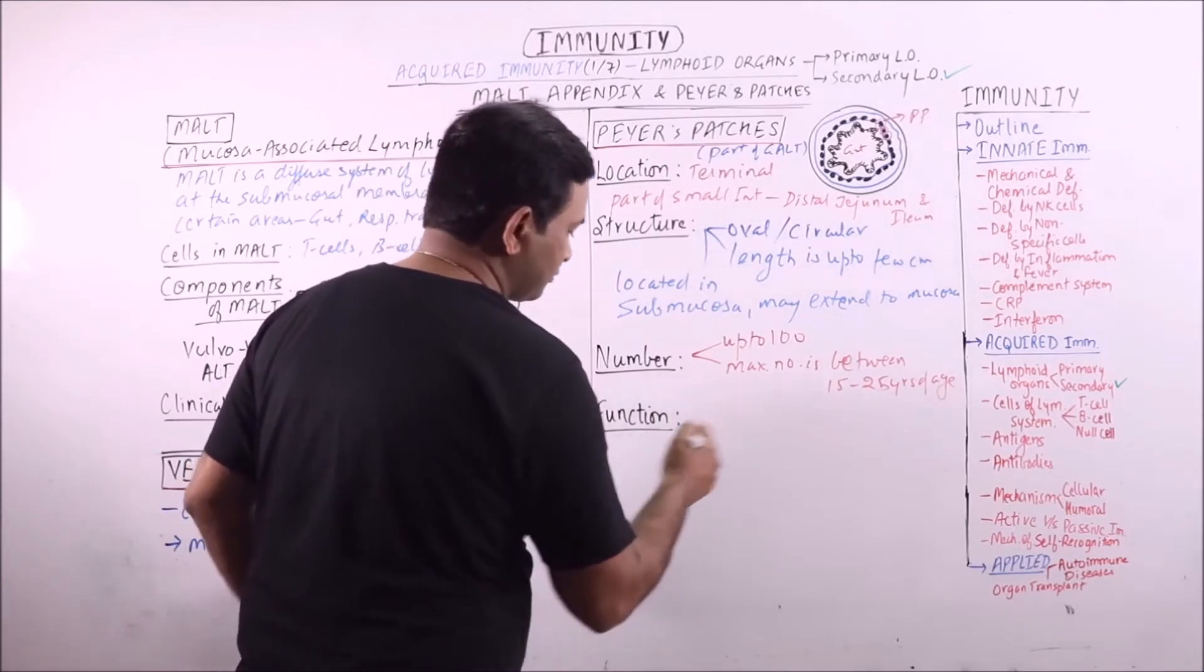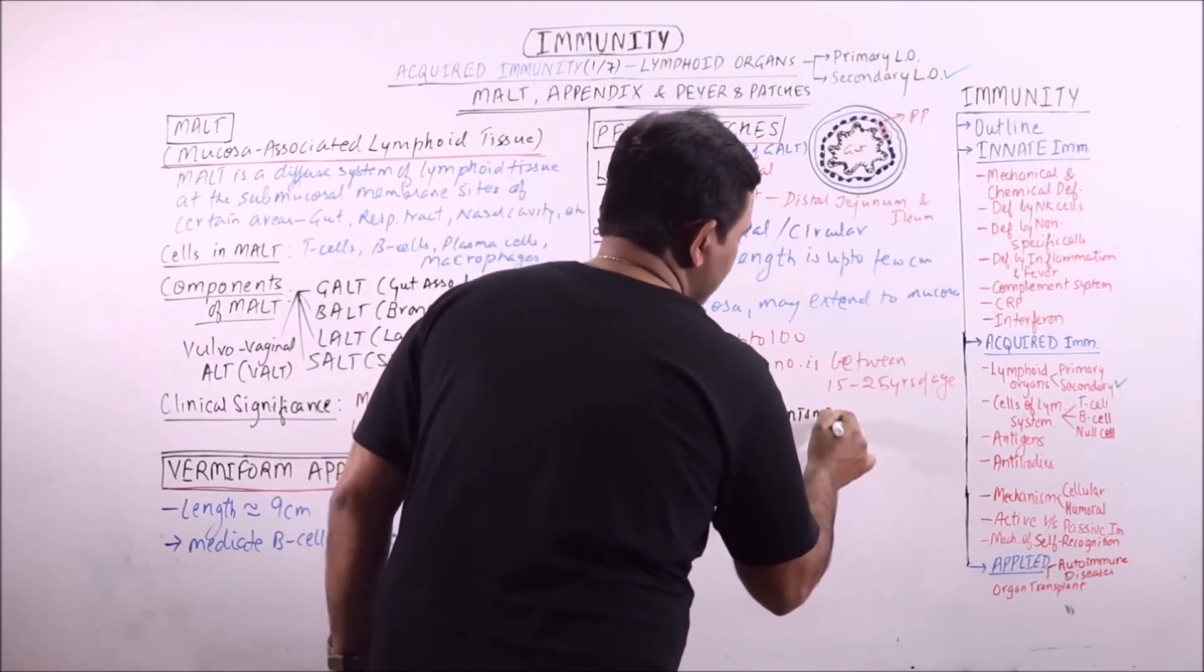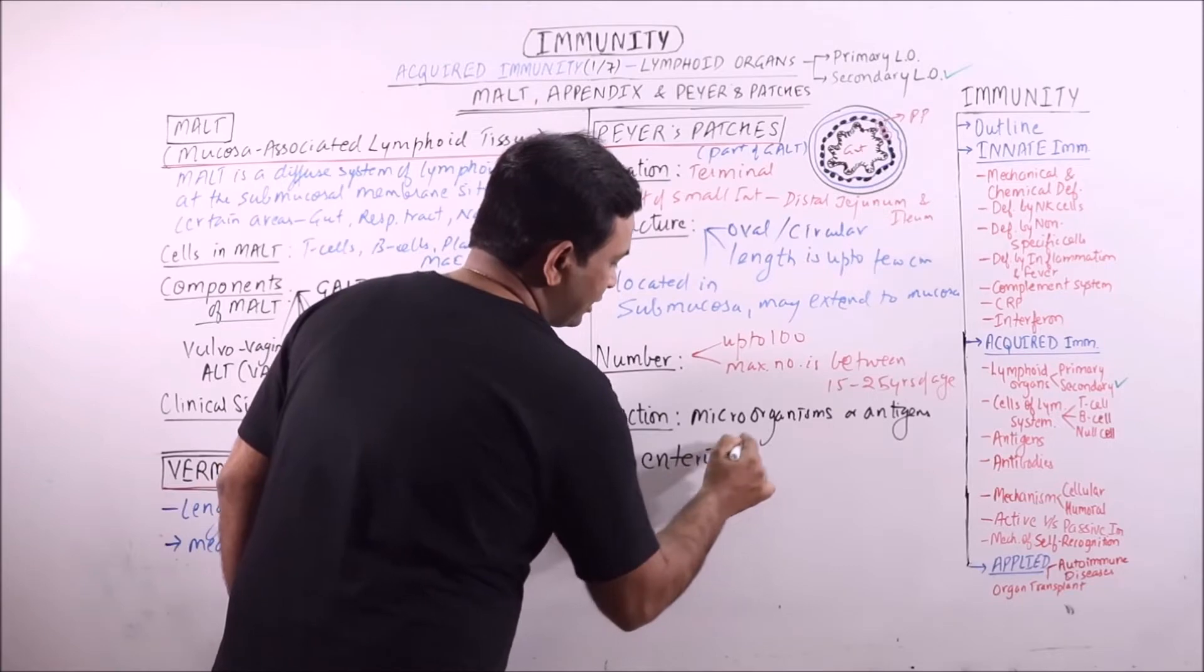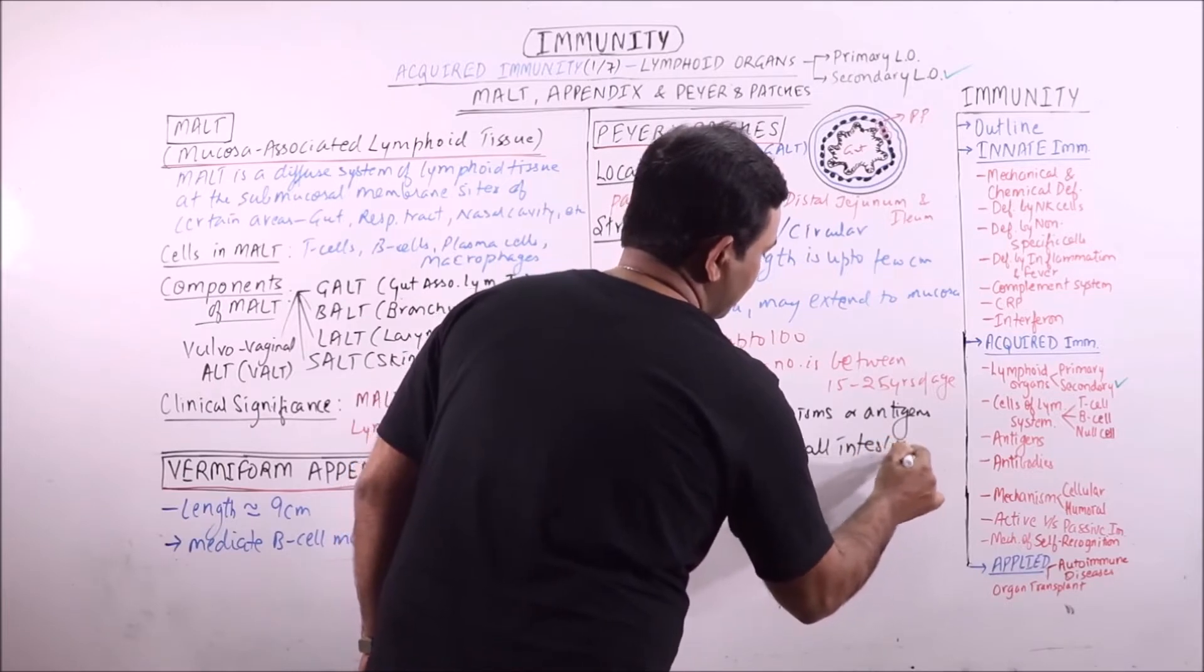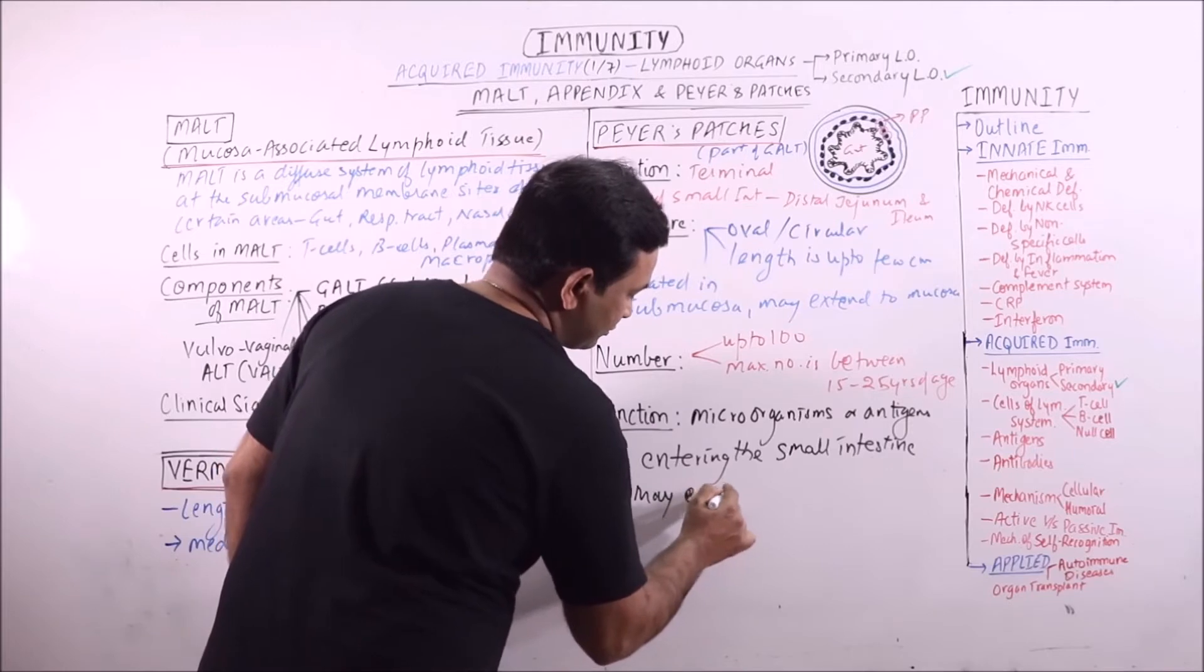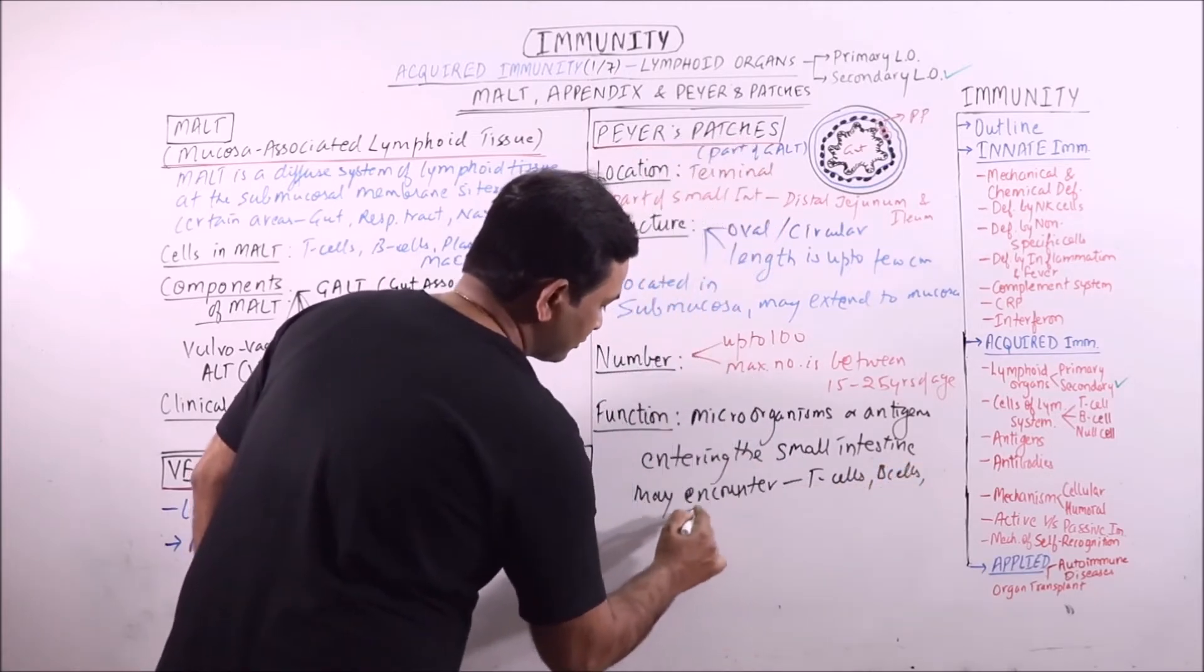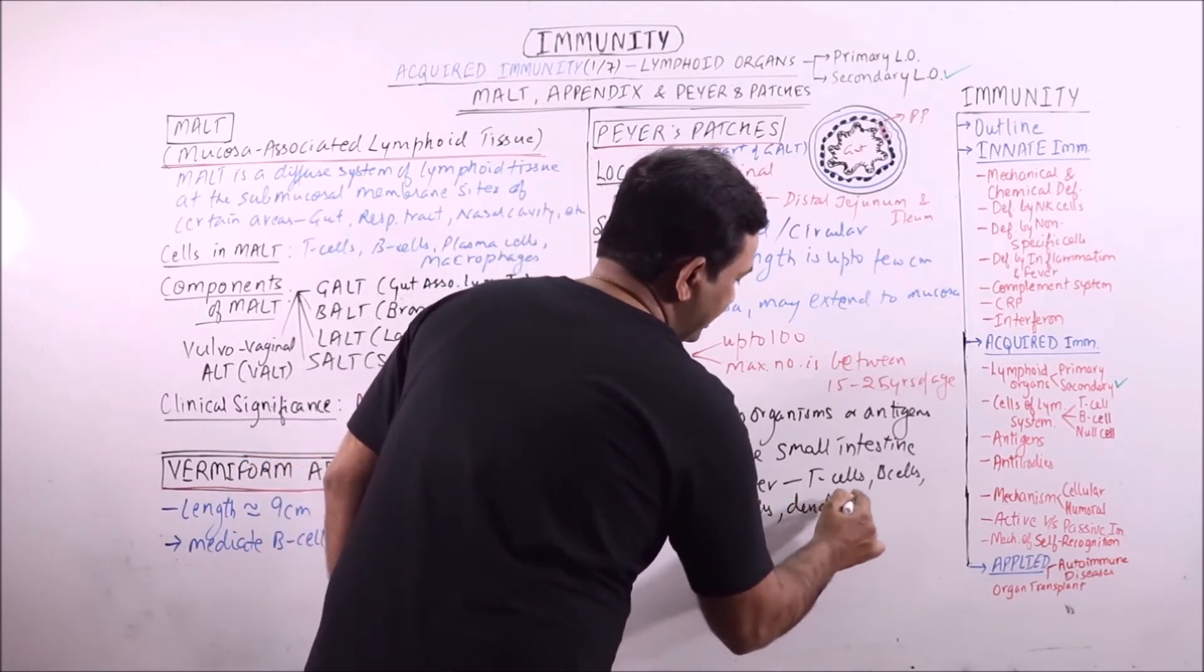Now the function. Function is that the microorganisms, the antigens entering the small intestine may encounter the T cells, B cells, plasma cells,